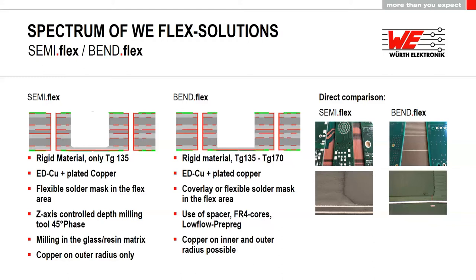For copper plating in bend-flex, same as semi-flex: ED copper with additional plated copper. In the micro-section comparison, on one side you see the depth-milled area with exposed glass fibers and the 45-degree chamfer for semi-flex. On the other side, the bend-flex micro-section shows no visible glass fibers since they're fully integrated in the resin matrix, and the depth is very precisely defined.